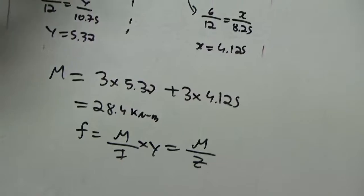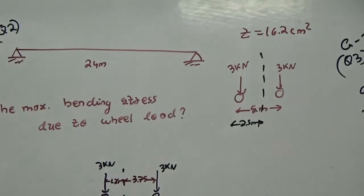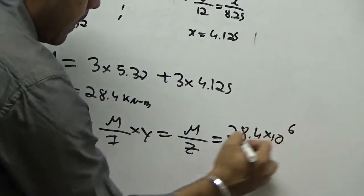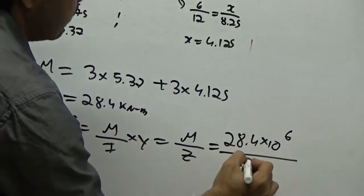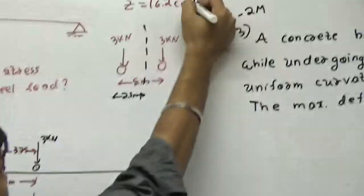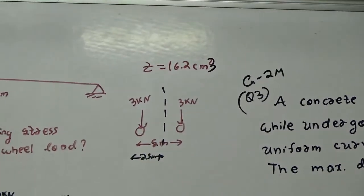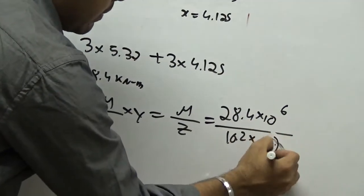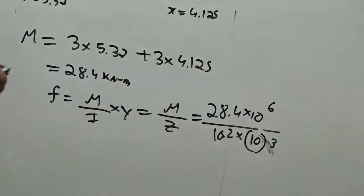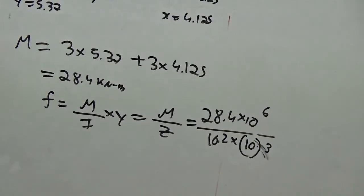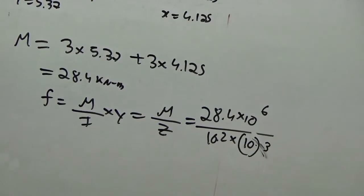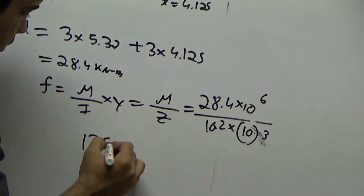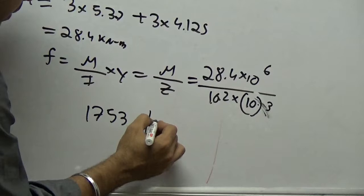To find bending stress, f equals M by Z. The section modulus Z was given as 16.2 centimeter cubed. Converting to newton and millimeter: 28.4 into 10 to the power 6 divided by 16.2 into 10 cubed gives 1753 newton per millimeter squared.